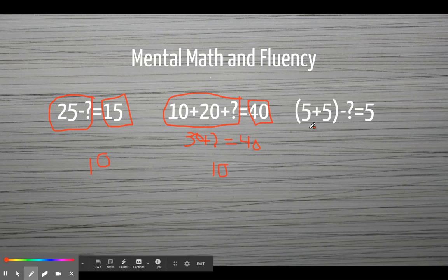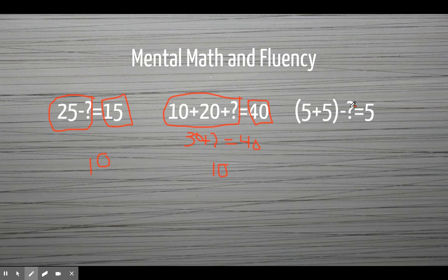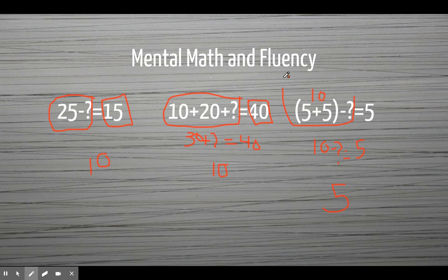The last one has parentheses. I need to know the quantity (5 plus 5) minus something equals 5. First thing I'm going to do is solve my parentheses because I always do that. Five plus five is 10. So I have 10 minus something equals 5. And I know that 10 minus 5 is going to leave me with 5. Remember, we have to make the left side of the equation equal the same as what's on the right.